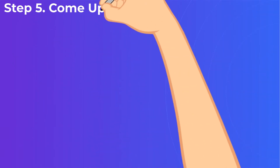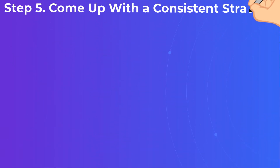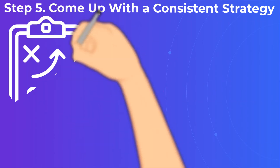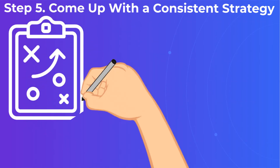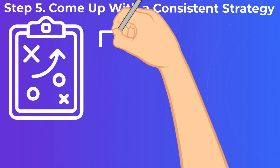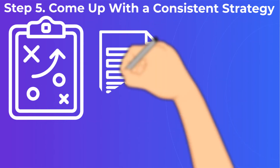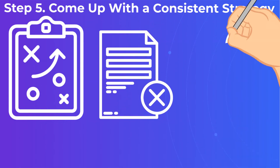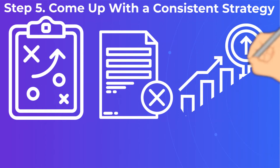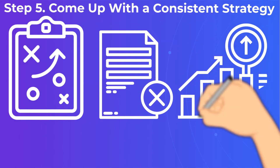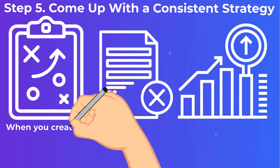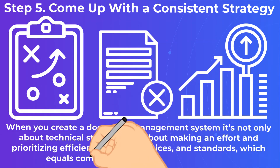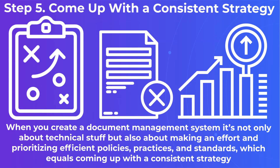Step 5: Come up with a consistent strategy. Remember the weaknesses and pain points identified in Step 1? Time to find out how to get rid of them using your new DMS. When you create a document management system, it's not only about technical stuff, but also about making an effort and prioritizing efficient policies, practices, and standards — which equals coming up with a consistent strategy.